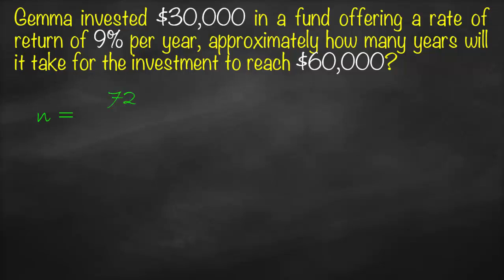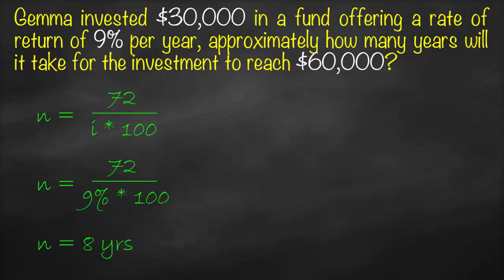Applying the Rule of 72: n equals 72 divided by (9% times 100), which gives us 72 divided by 9, equal to 8 years. So approximately it will take Jama 8 years to double her investment earning an annual interest rate of 9%.